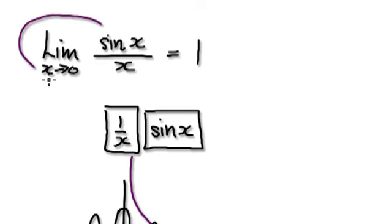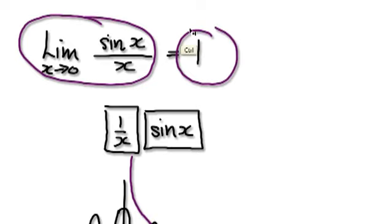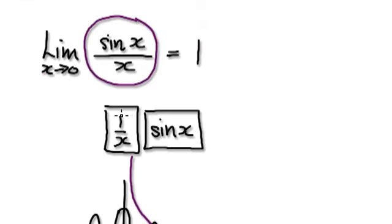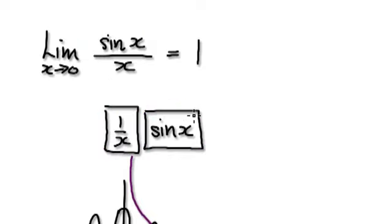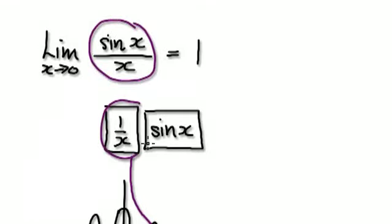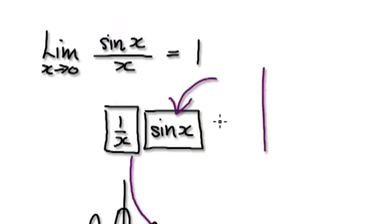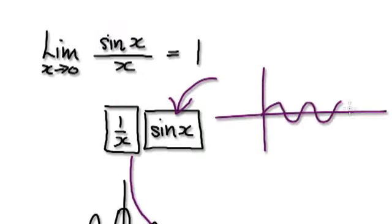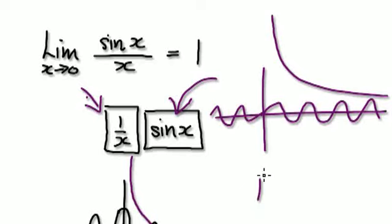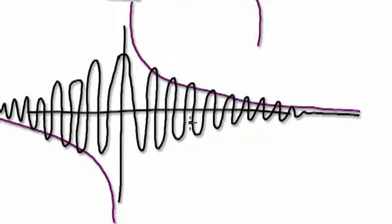Remember that the limit of sin(x)/x is 1. But when given this limit, try and visualize it as a reciprocal multiplying sine of x — visualize it as one block multiplying another block. Your sine of x graph will look something like this, and your reciprocal graph will look something like this. When you multiply the two together, it will look something like this.